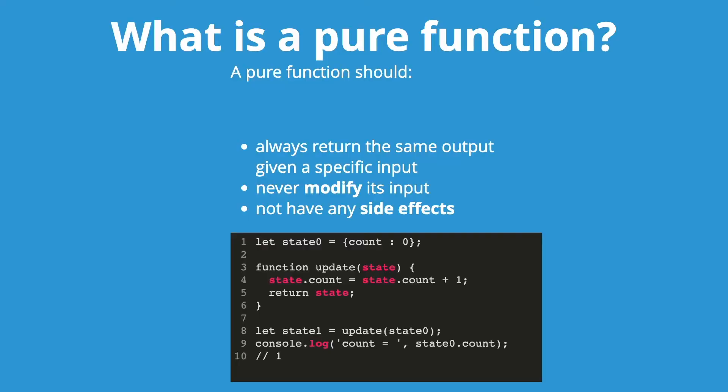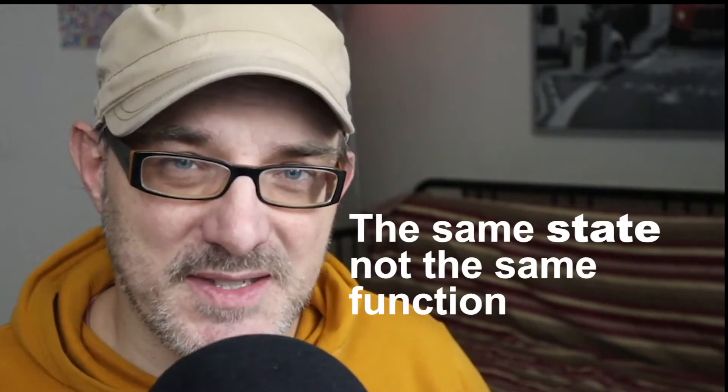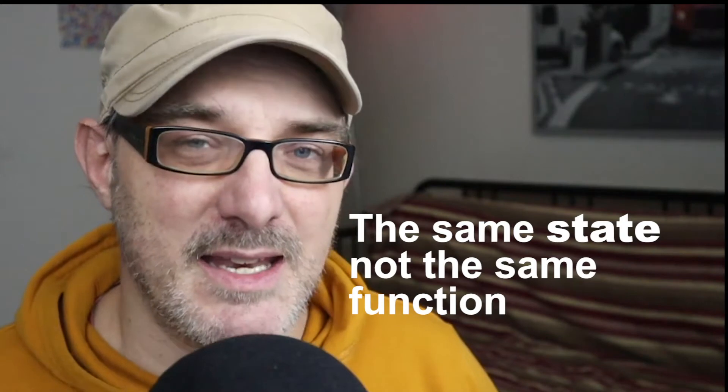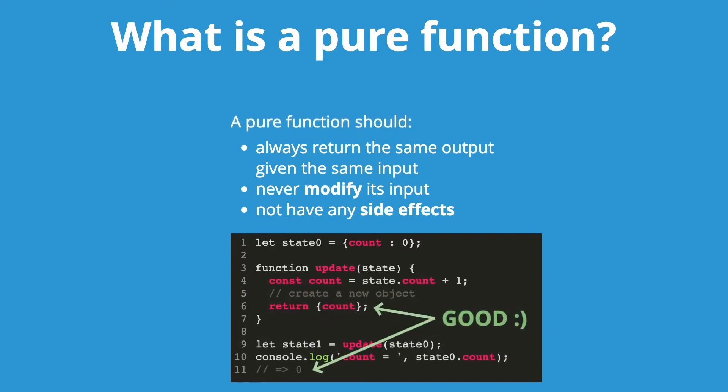Now, if we take the example of a simple state — an object that has a field called count with an initial value of zero — our update function takes this field, increases it by one, and returns the state. But if we call this function, we end up modifying the initial state because the function returns the same object that was sent in as a parameter.